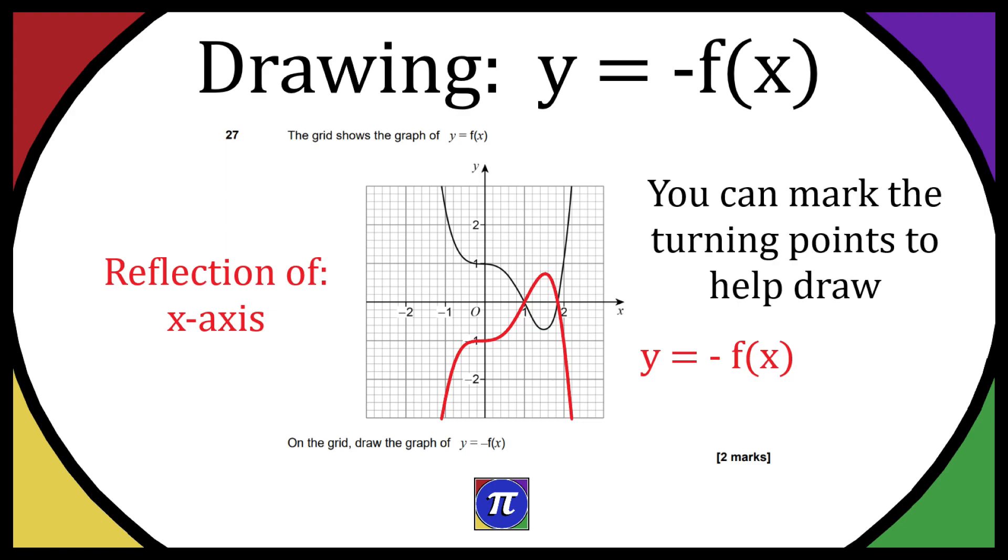If you have trouble drawing it you can mark the turning points. So a turning point is where the graph actually starts to change direction. So for example you can mark the turning points and then you can do the equivalent ones on the opposite side of the x-axis and then you can just try and match up the lines but you've got to be careful. Once you do that it should be a lot easier to draw it.